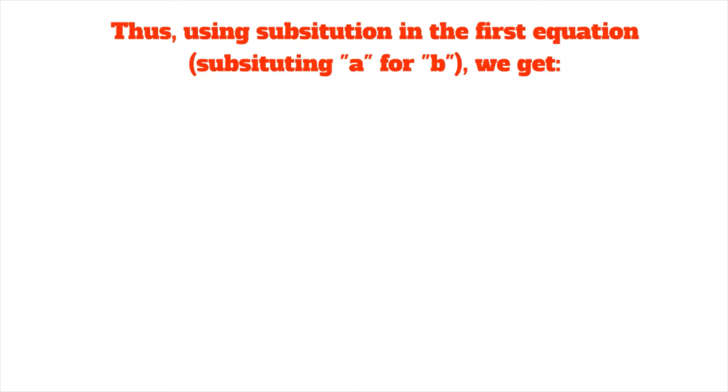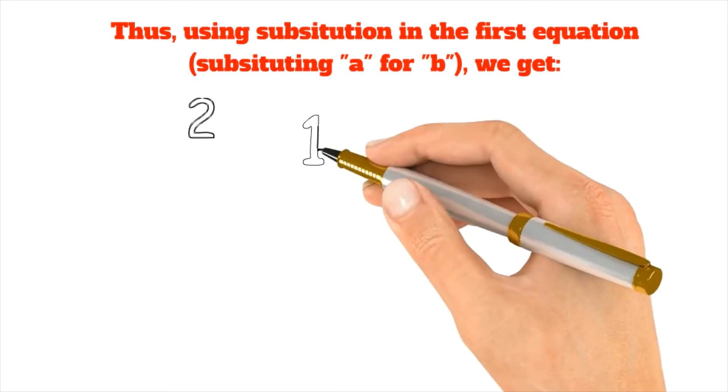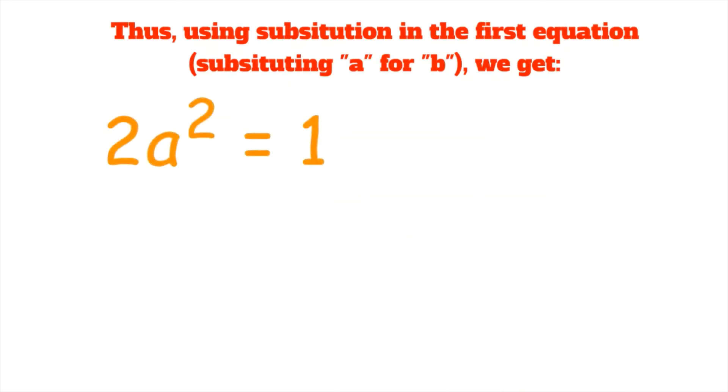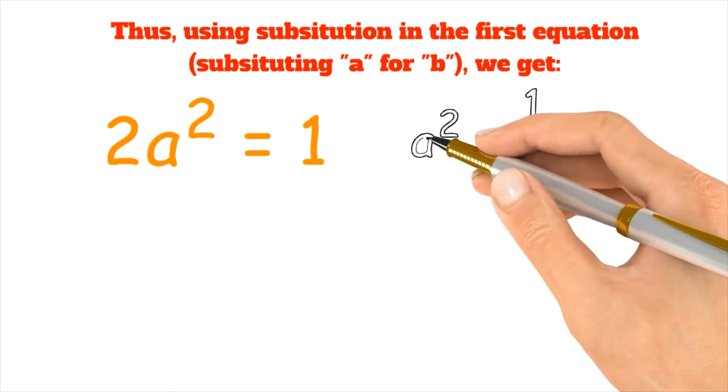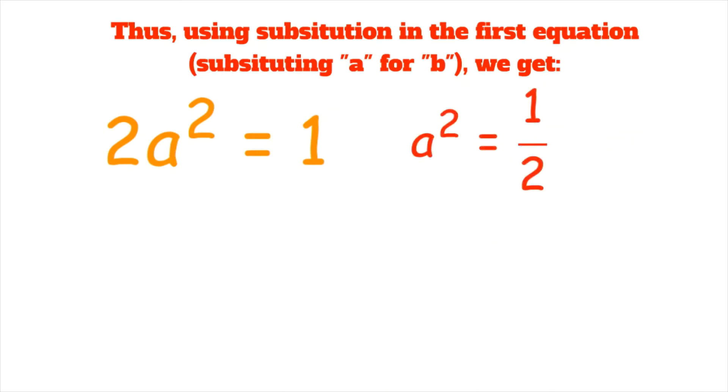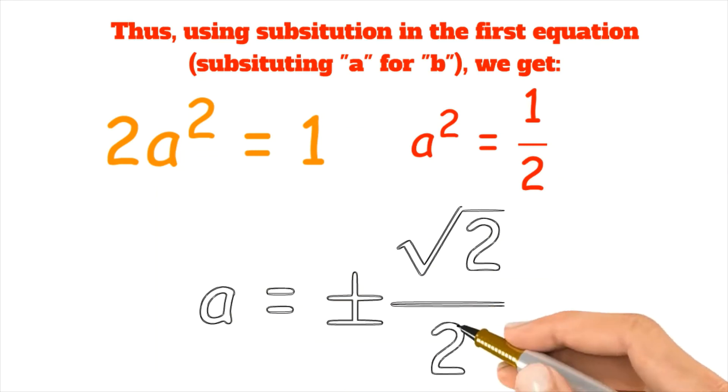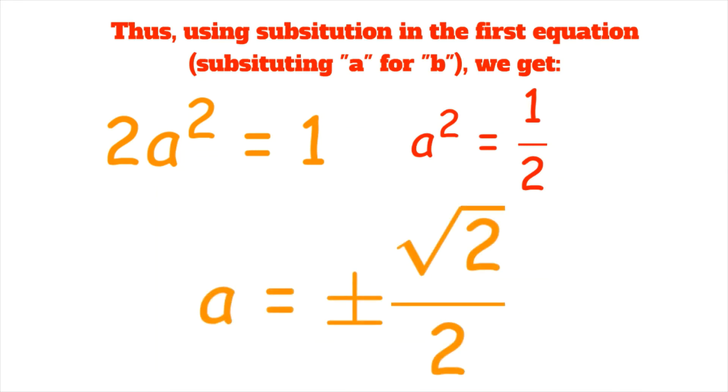Thus, using substitution in the first equation (substituting a for b), we get 2a² = 1, or a² = 1/2. Taking the square root of both sides, we get a = ±√2/2. Remember that we have to rationalize the denominator.